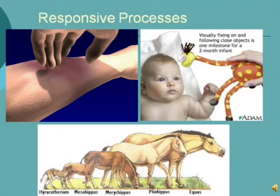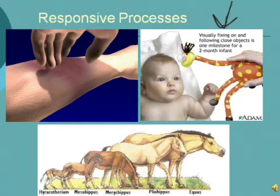Individual response is like an infant responding visually to a toy held close up — one of the milestones for a two-month-old is to visually fixate on an item. That's an individual adaptation. Another example is a brown rabbit that individually adapts and turns white when there's snow on the ground, while a rabbit of the same type in a warm climate stays brown. They won't all turn white just because it's December — they turn white based on conditions in their region.